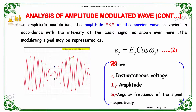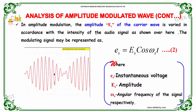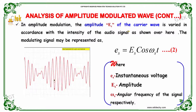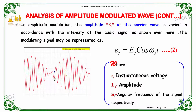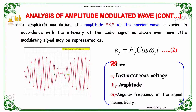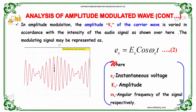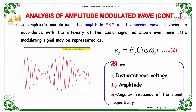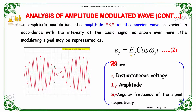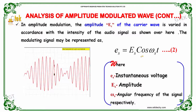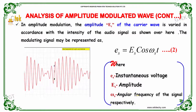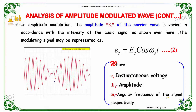In amplitude modulation, the amplitude E_c of the carrier wave is varied in accordance with the intensity of the radio signal. The modulating signal may be represented as E_s = E_s · cos(ω_s · t), where ω_s is the angular frequency of the signal.